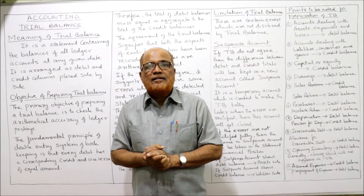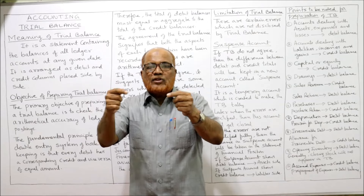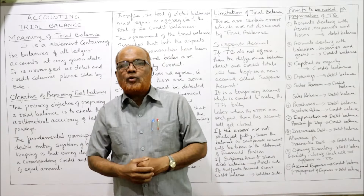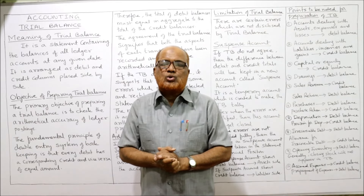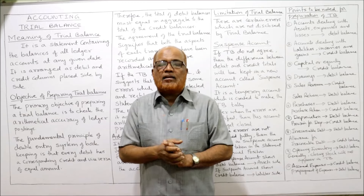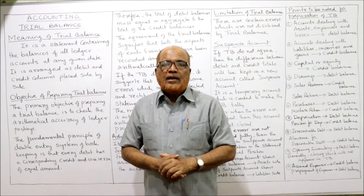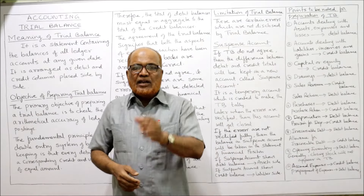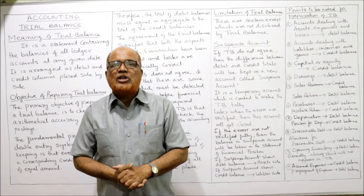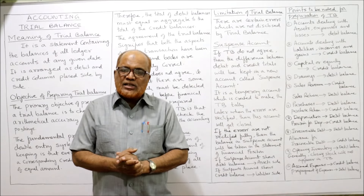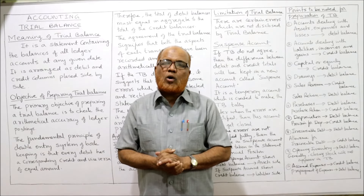The suspense account is a temporary account opened when the trial balance is not tallying. If the total of debit and credit are not equal, the difference is put into the suspense account. Later, when the errors are located and rectified, the suspense account gets closed. If it still shows a balance, it is taken in the statement of financial position — debit balance on the asset side, credit balance on the liability side. In the next video I'll start the problems on trial balance.